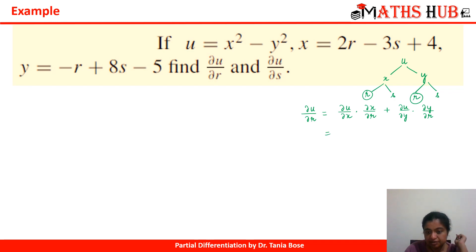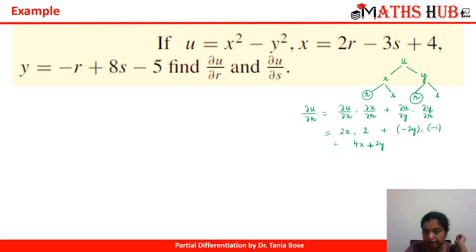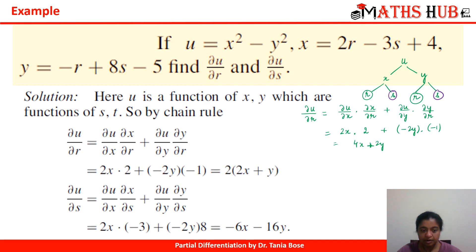∂u/∂x = 2x, ∂x/∂r = 2, ∂u/∂y = -2y, ∂y/∂r = -1. So ∂u/∂r = 2x(2) + (-2y)(-1) = 4x + 2y. Substituting x and y gives the answer in terms of r. Similarly, ∂u/∂s = (∂u/∂x)(∂x/∂s) + (∂u/∂y)(∂y/∂s), which gives -6x - 16y when the partial derivatives are evaluated.